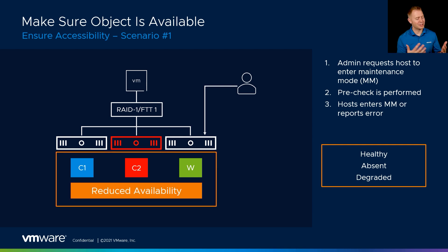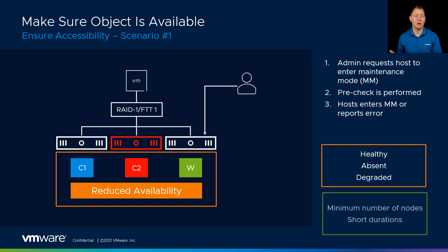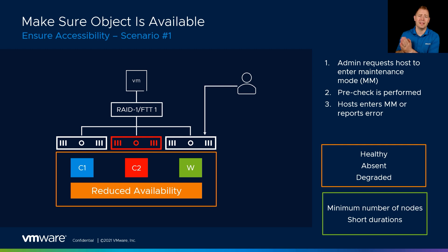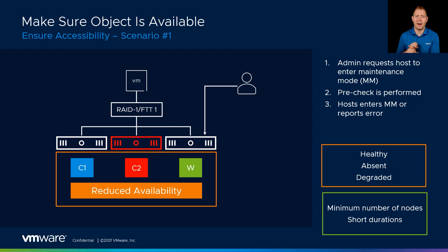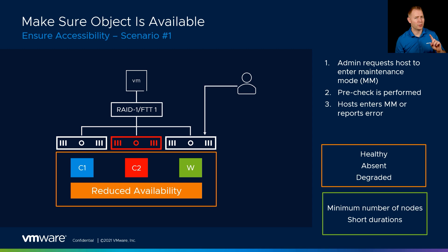You may be thinking: why would I choose ensure accessibility versus full data migration? It might depend on the number of nodes in the environment. We've got a RAID 1 FTT of 1 VM which requires a minimum of three ESXi hosts. Since we just have those three nodes, we don't have a place to put that data if we're choosing full data migration. The second reason — perhaps more important — is how long is the maintenance window? Even if we have 10 ESXi hosts, if the maintenance window is only five minutes, is it worth the time to copy over 10 terabytes of data? We may choose to accept the risk of a double fault situation, knowing that within a couple of minutes we can bring that host back out. This is actually VMware's recommended option if the maintenance is going to be less than 60 minutes.